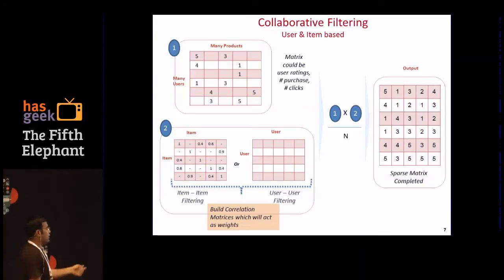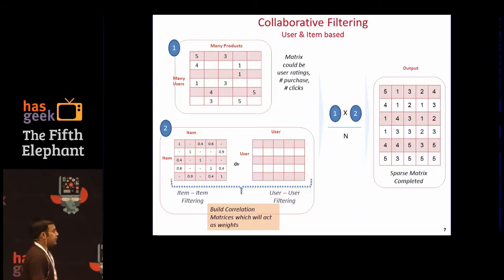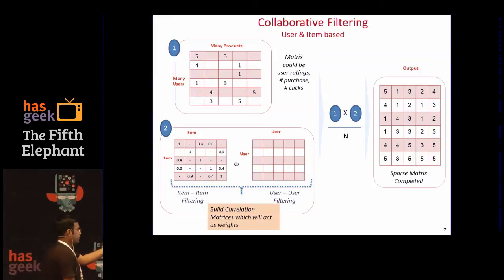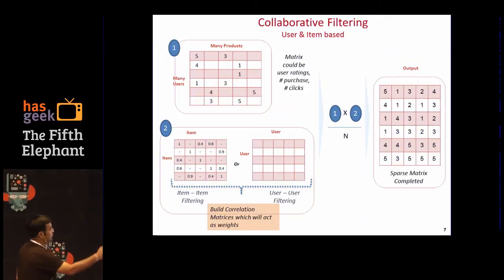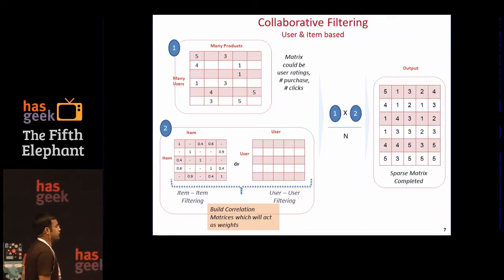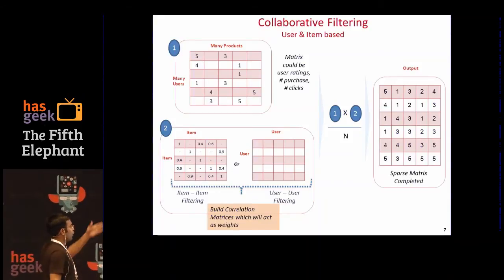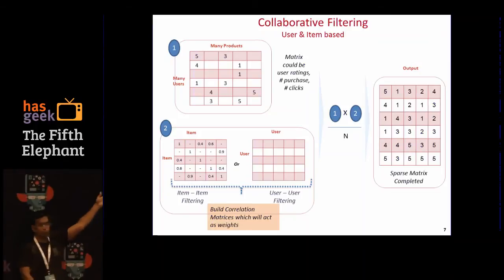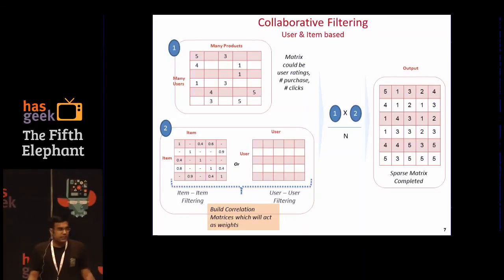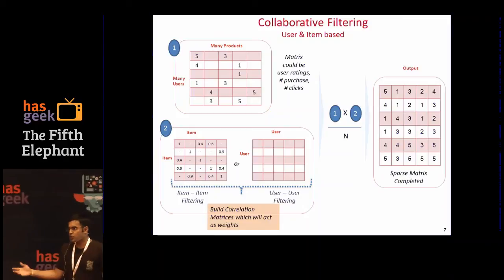Once you compute the similarity — you could use cosine similarity, Euclidean distance, Pearson, or any metric of your choice — once you have the similarity score computed, you can calculate the final values for all the sparse entries. User 1 has purchased product 1 and product 3, so you know how product 1 is similar to other products and can compute what the recommendations would be for the other items in the catalog. Likewise, for user-based collaborative filtering, you compute the user-user similarity — how similar am I to all the other users in the database.